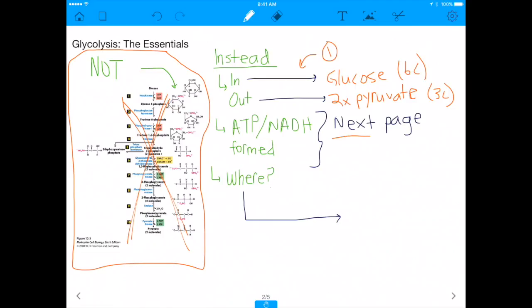The other thing you should know about metabolic processes are the ATP slash NADH formed. Are there any formed? How many? And how are they formed exactly? And the last thing you should know about any metabolic process is where does it happen?